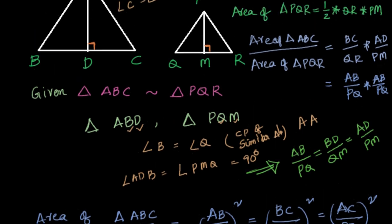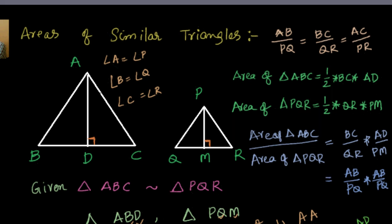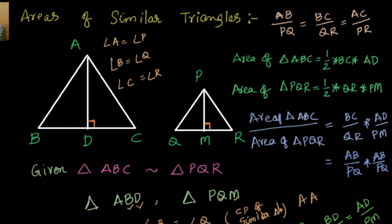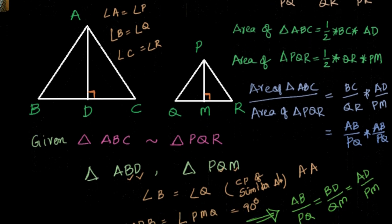We know that AB by PQ is equal to BC by QR is equal to AC by PR. So one point to remember is: whenever we have two similar triangles, the areas are in the ratio of the square of the sides, or the square of the medians, or the square of the altitudes, or the square of the angle bisectors of the triangle. Whatever corresponding measures you take, their squares will give the ratio of the areas.